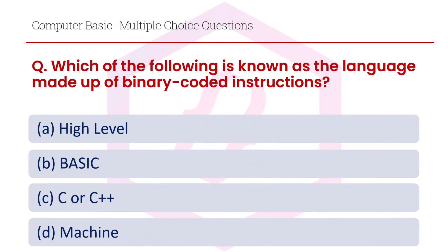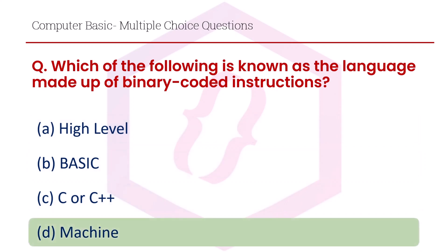Which of the following is known as the language made up of binary coded instructions? Option A viable, option B BASIC, option C C or C++, option D machine. The right answer is option D, machine.